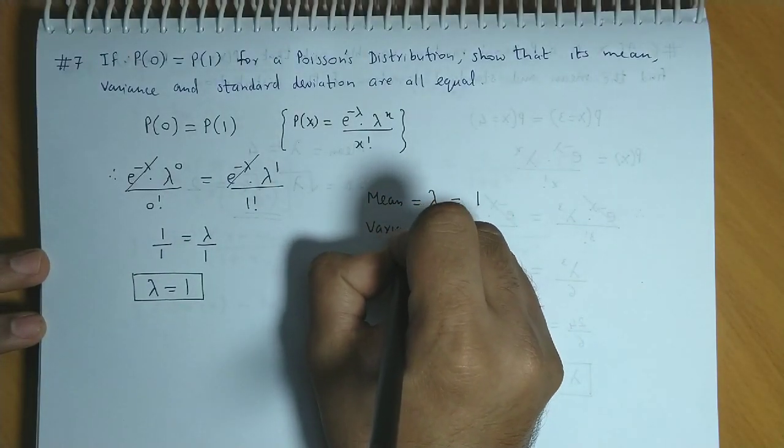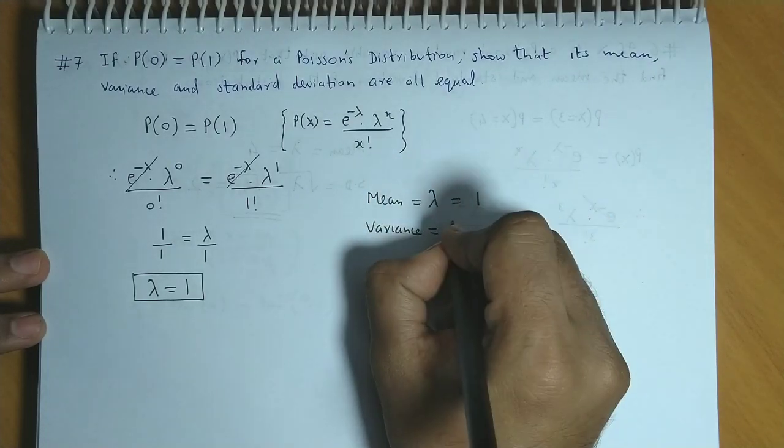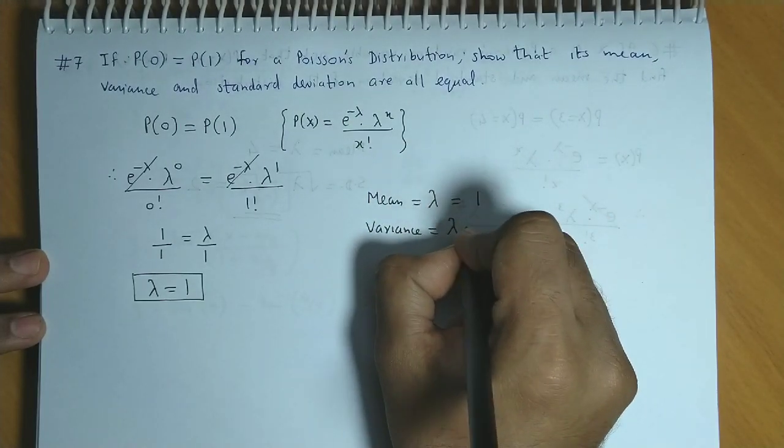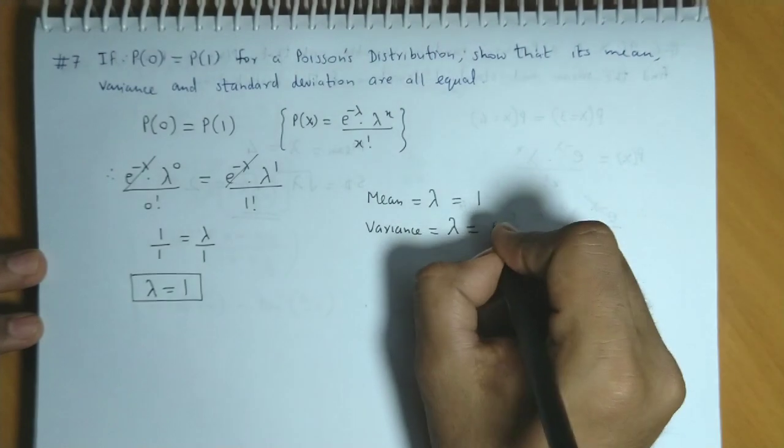Next, variance. Variance and mean for the Poisson's distribution are equal. So variance is also lambda, which is equal to 1.